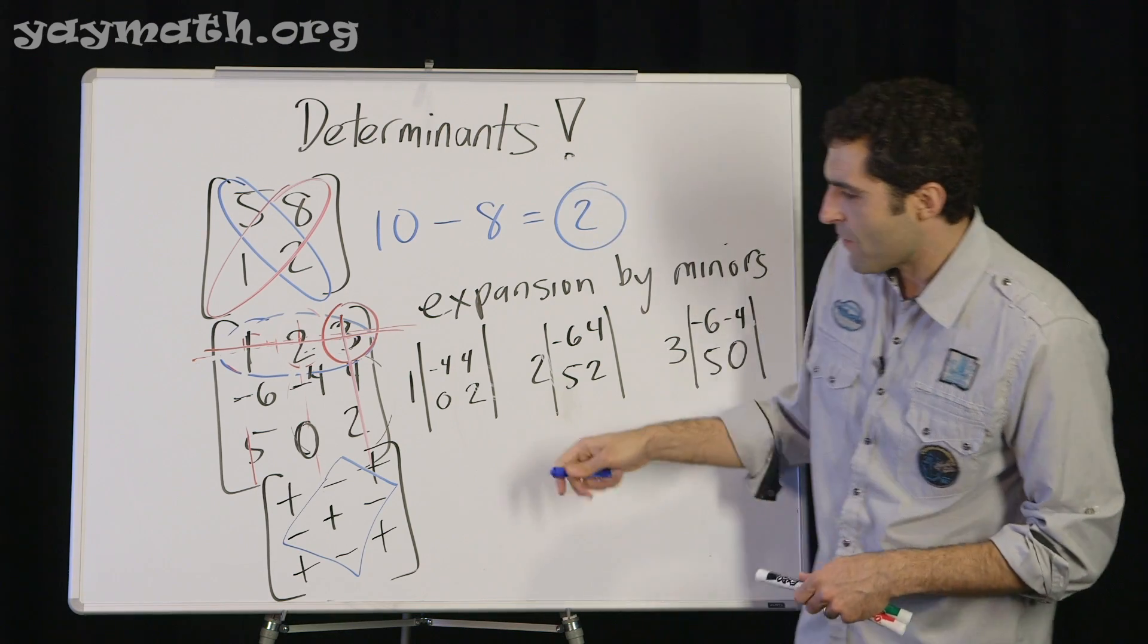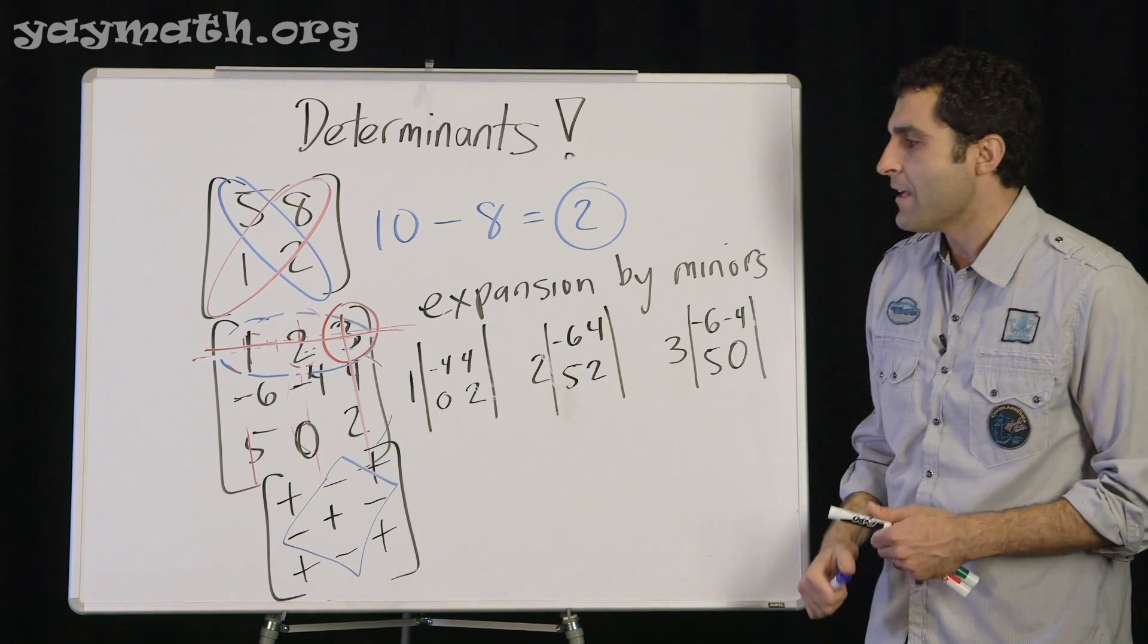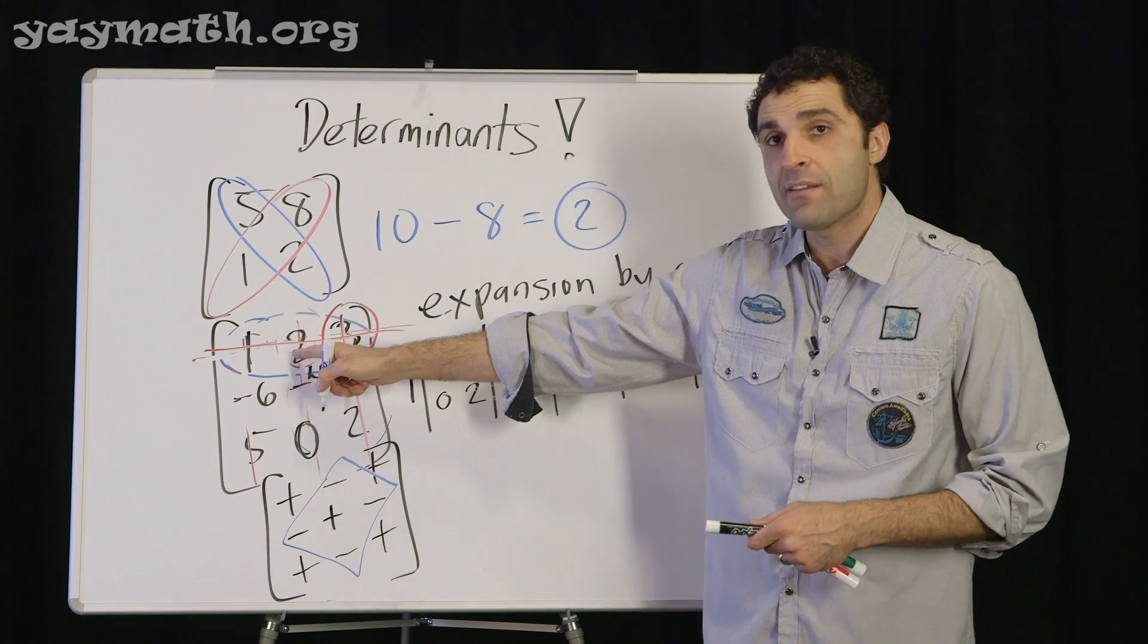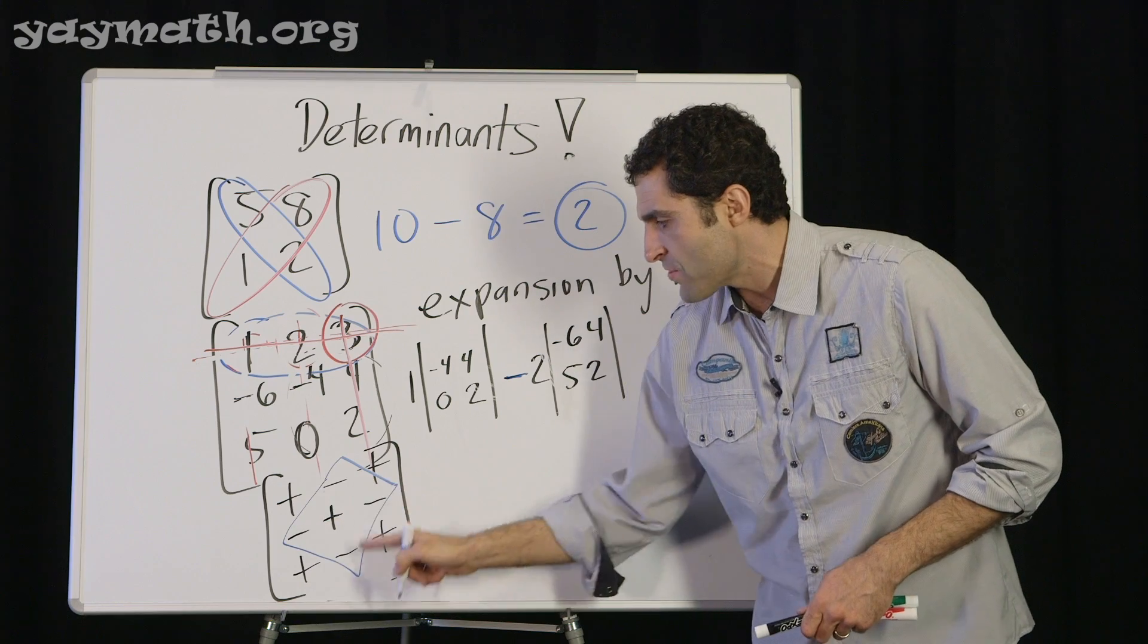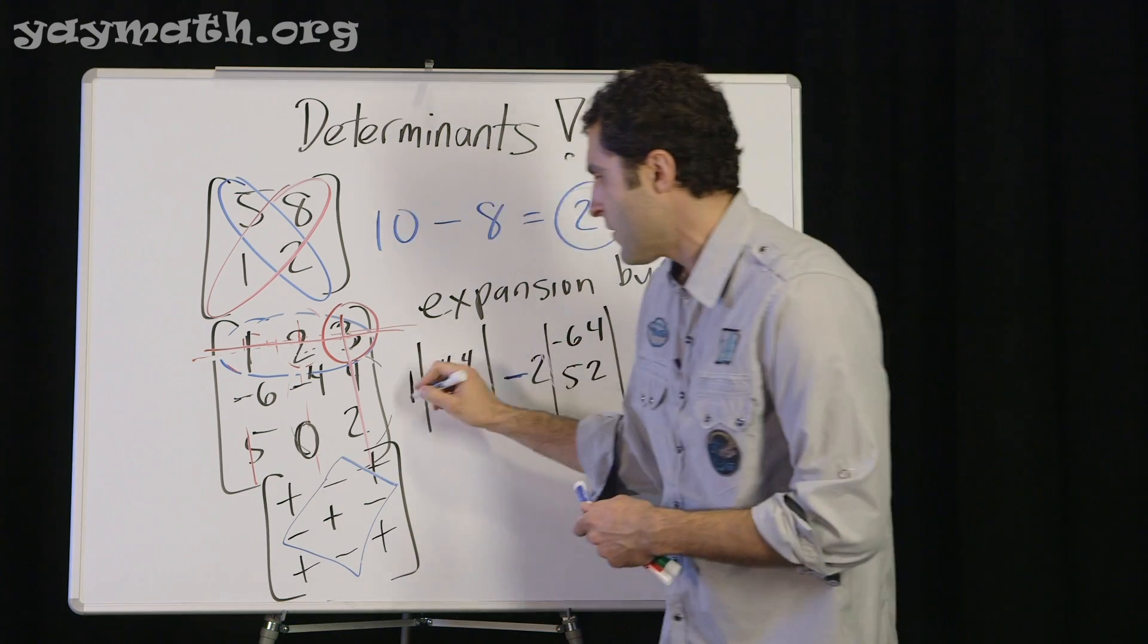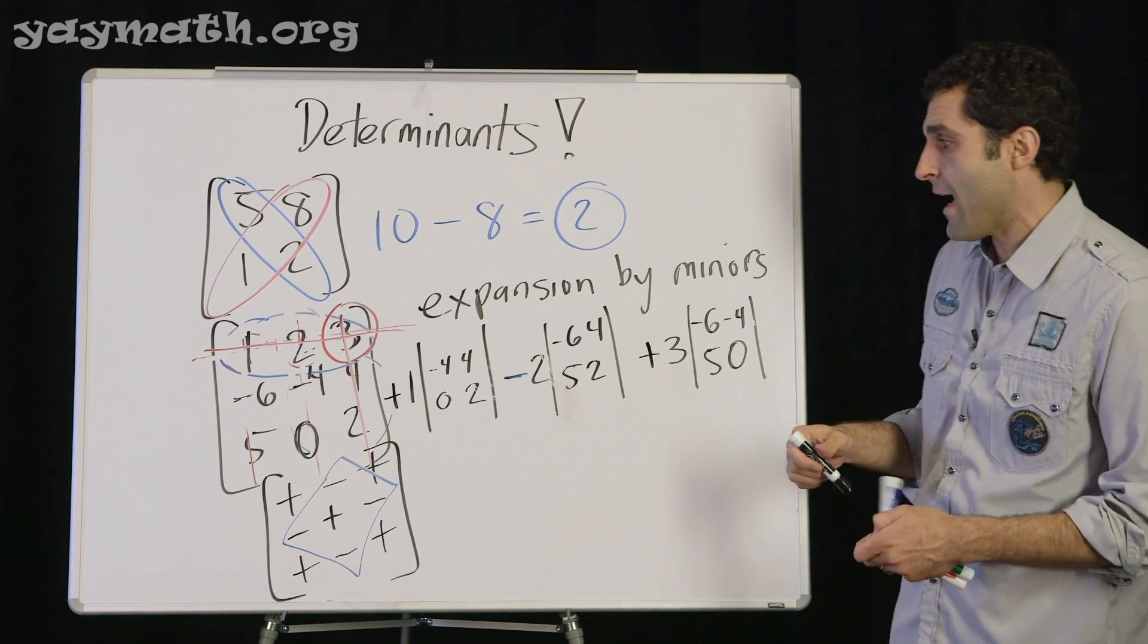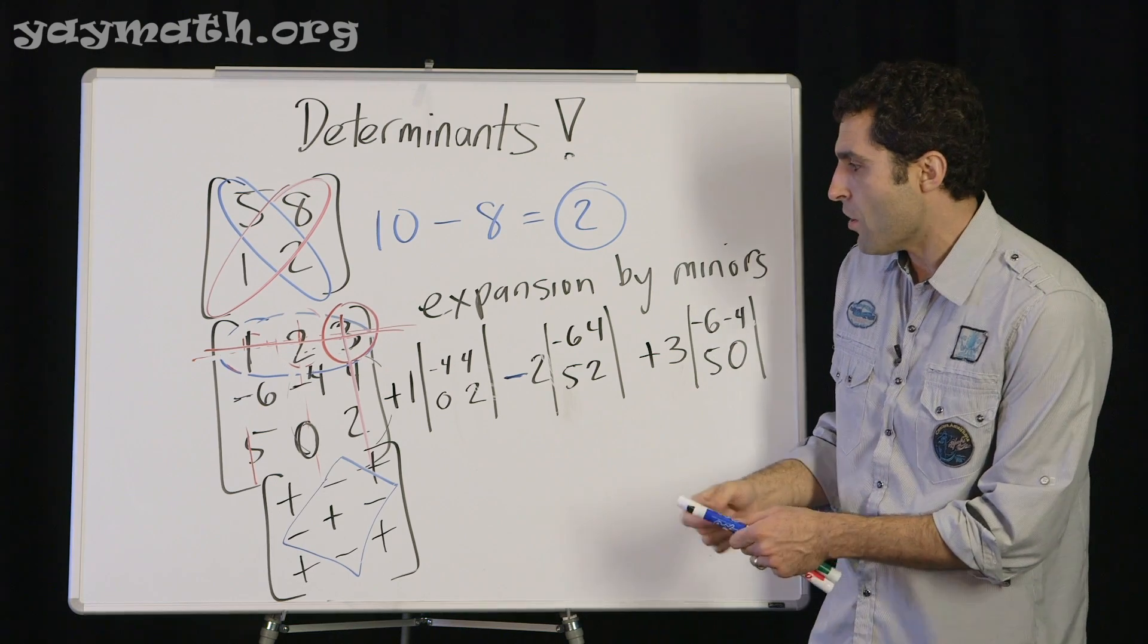So basically any number that is in these slots would be negative. In this case, it's our 2, so that becomes negative here. Had the 2 been negative, we would have changed the sign, in other words. So these mean change the sign of whatever number is in that spot. The 1 remains positive and the 3 remains positive. And now we're doing determinants of two by twos now. These are the minor matrices of two by twos.